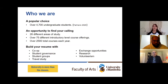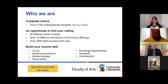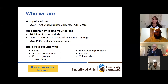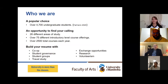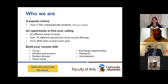So what is Arts all about? Well, first we can tell you that you've chosen a popular place. Arts is one of the largest faculties on campus with over 4,700 undergraduate students, about 500 graduate students, and 26 different areas of study. Beyond the classroom, there are many other opportunities that students can get involved in. Each of you is sure to find something that fits you. We have five departments that offer co-op programs and numerous travel and exchange opportunities for when they start up again.